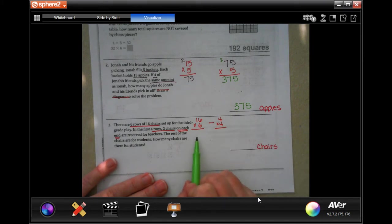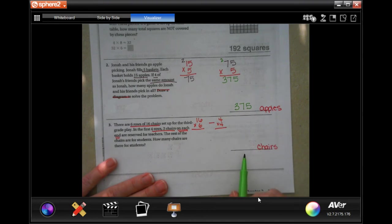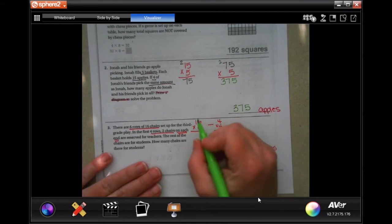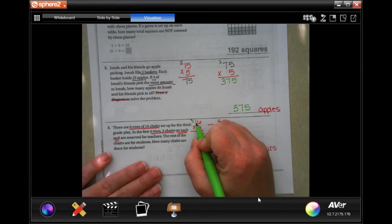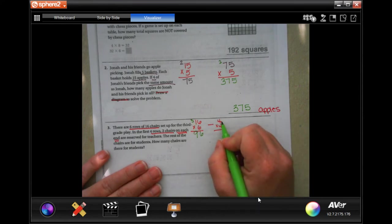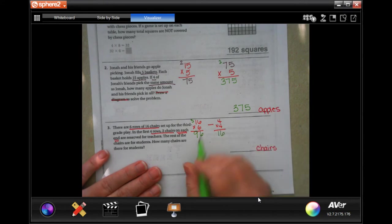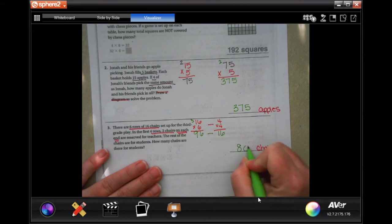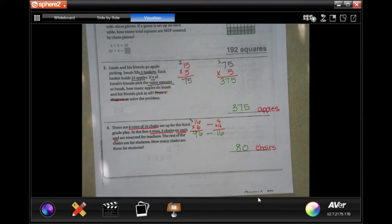So I'm going to take the total amount of chairs and get how many chairs are set up for the students. Six times six is 36, carry our three. Six times one is six, plus three is nine. Now, four times four is 16. If I do 96 and I take away that 16, I get 80 left. And that's 80 chairs.